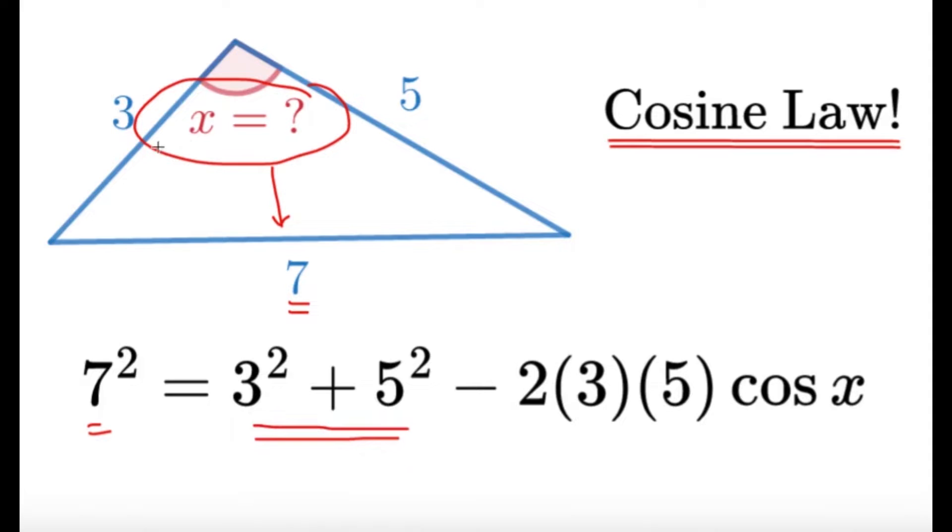Minus twice the product of the two sides. So 2 times 3 times 5. And then, obviously since it's called the cosine law, don't forget the cosine of the angle. In this case, cosine x.